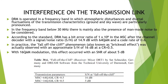DRM is operated in a frequency band in which atmospheric disturbances and diurnal fluctuations of the transmission characteristics — ground wave and sky wave — are particularly pronounced. In frequency bands below 30 megahertz, man-made noise must also be considered. According to the standard, DRM has a bit error ratio of 1×10⁻⁶ in the MSC after the channel decoder with a signal-to-noise ratio of 14.9 dB with 64-QAM and a code rate of 0.6. In practice, the cliff-edge (brick wall) effect was observed at approximately 16 dB SNR at CR=0.5, and with 16-QAM modulation this effect occurred at about 5 dB.